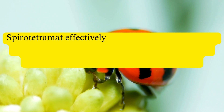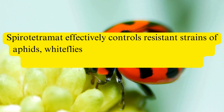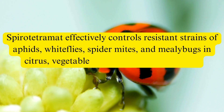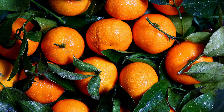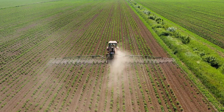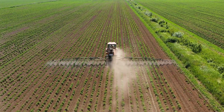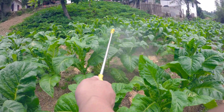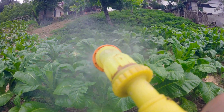Spiro-Tetramat effectively controls resistant strains of aphids, whiteflies, spider mites, and mealybugs in citrus, vegetables, cotton, and ornamentals. It can be applied through foliar sprays, soil drenches, or drip irrigation, ensuring thorough coverage. Adherence to label instructions is crucial for optimal pest control and environmental safety.